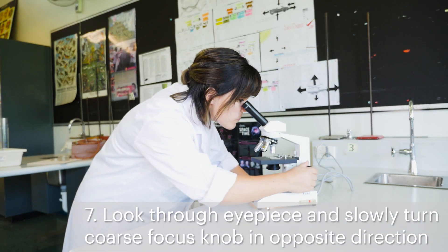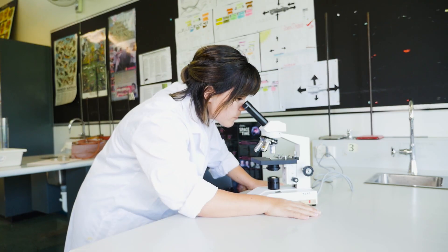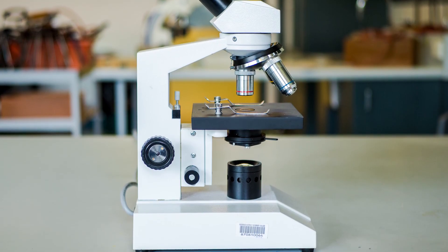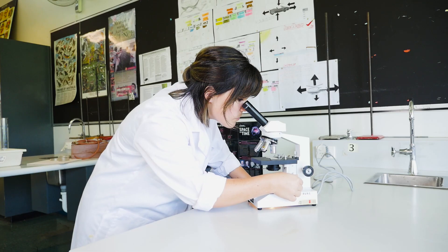Now you can look through the eyepiece and slowly turn the coarse focus knob in the opposite direction to focus on the specimen. If you turn the knob too quickly, you might miss the moment when the specimen is in focus. Once the specimen is roughly in focus, you can use the smaller fine focus knob to get a sharp image.